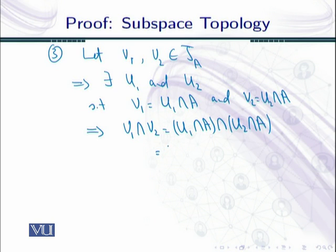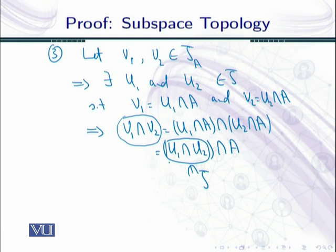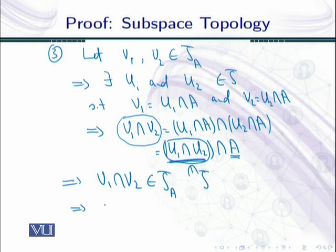So V₁∩V₂ = (U₁∩A)∩(U₂∩A). By simple set theory rules this can be written as (U₁∩U₂)∩A. Now U₁ and U₂ are both elements of τ, and since τ is a topology on X, U₁∩U₂ is also an element of τ. So (U₁∩U₂)∩A is an element of τ_A. This implies V₁∩V₂ belongs to τ_A. This is the end of the proof, so τ_A is a topology on A.